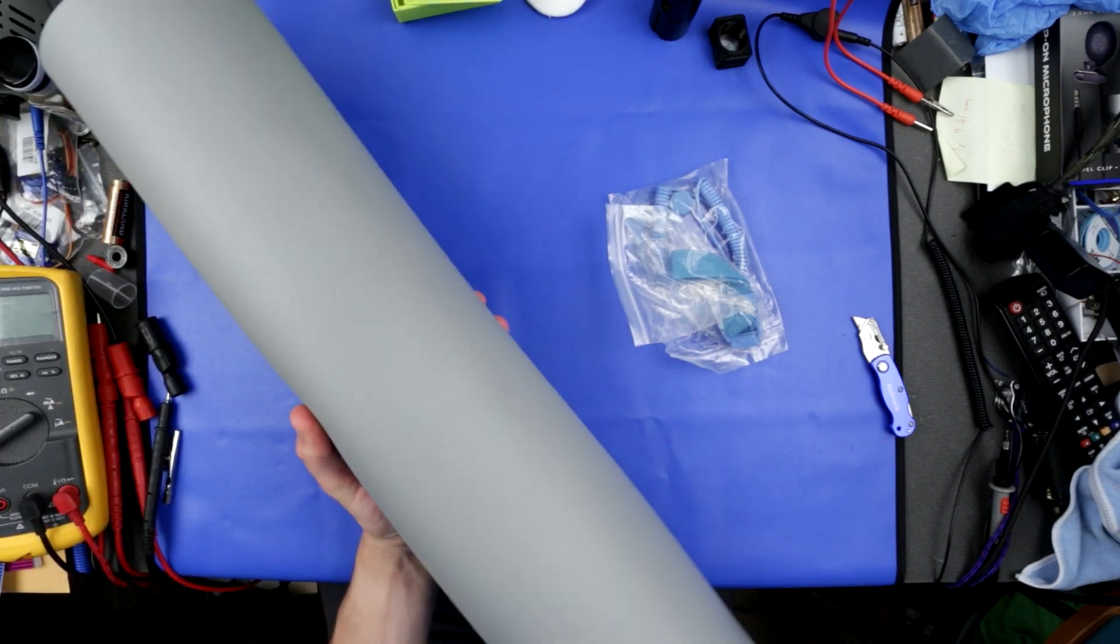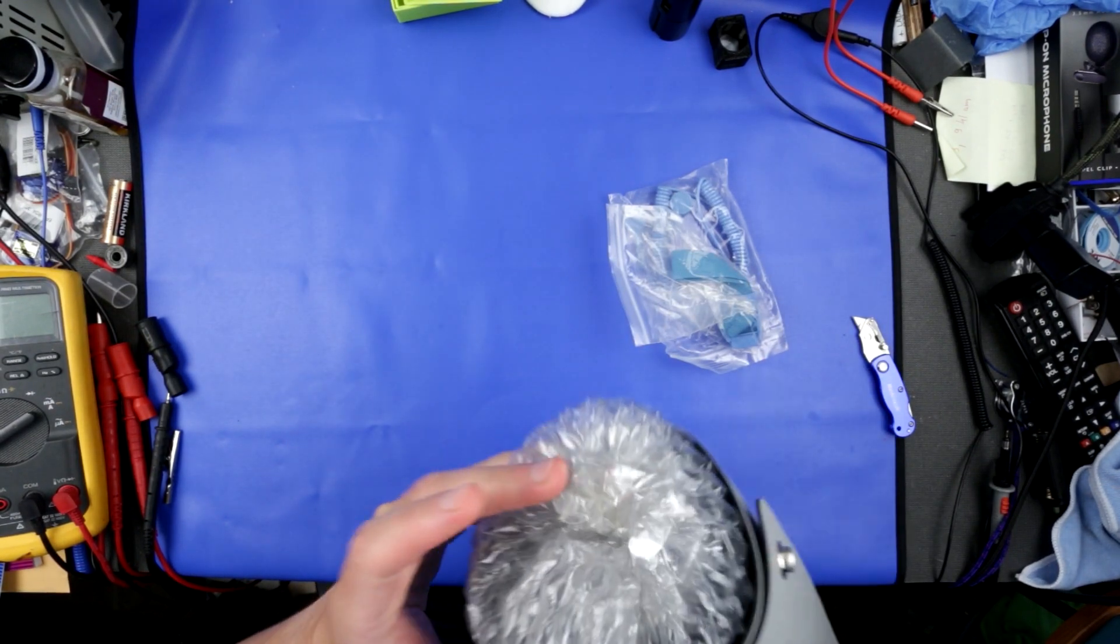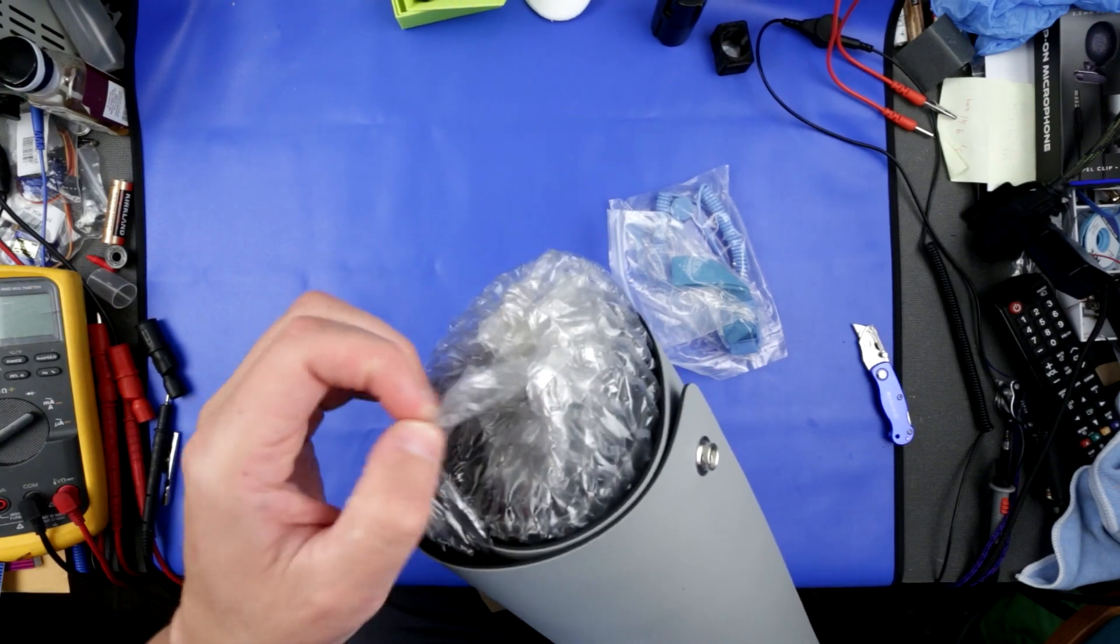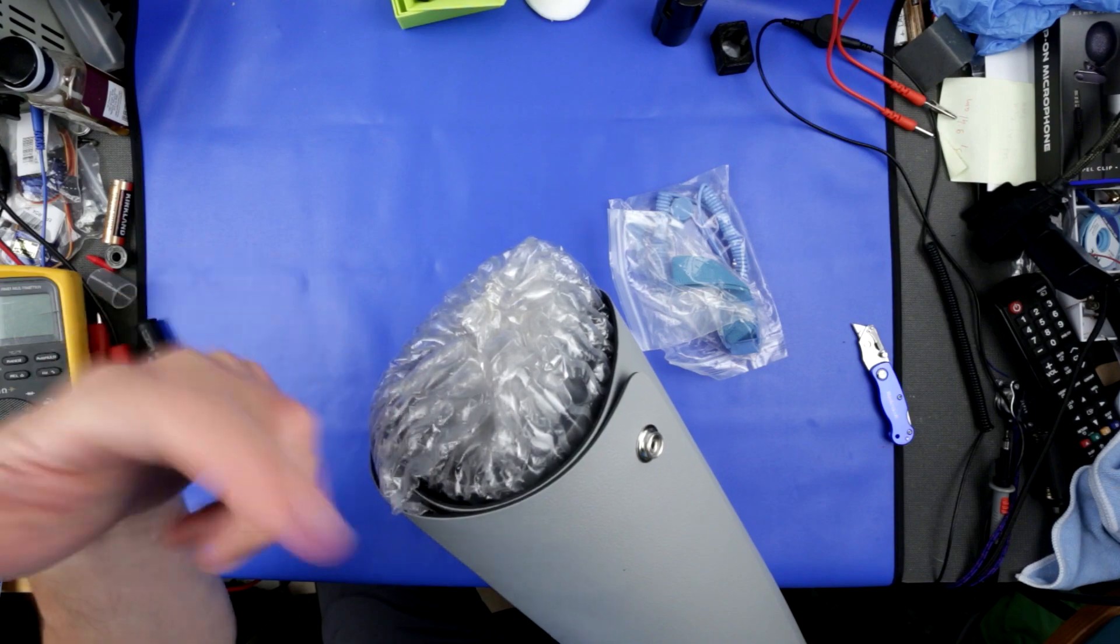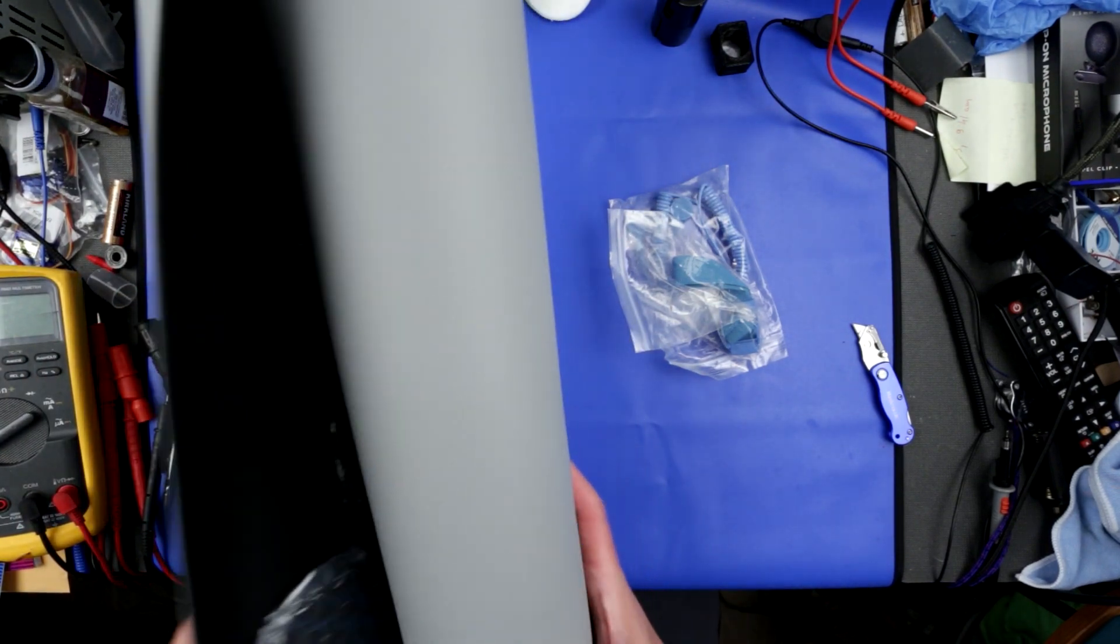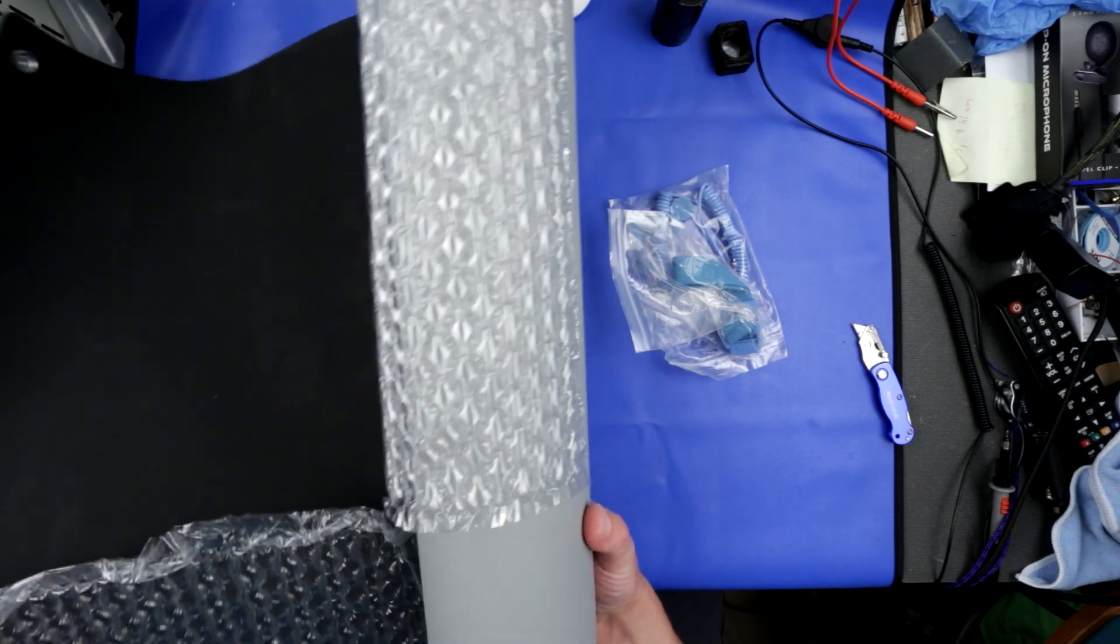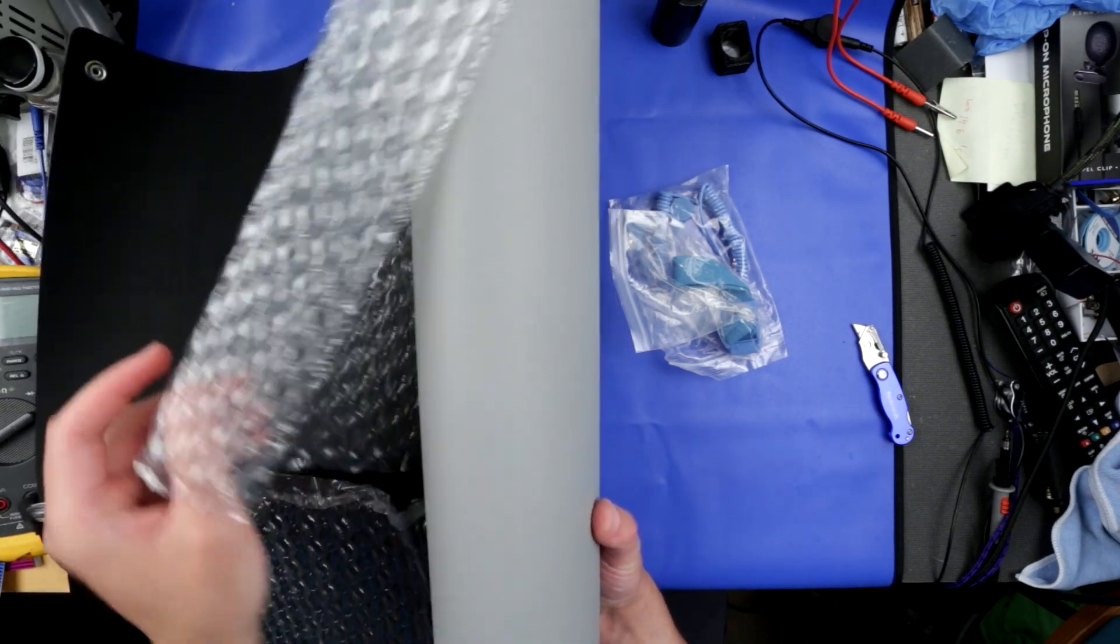So actually pretty nice surface here. And it's packaged quite well. Inside there is foam and bubble wrap to prevent this thing from collapsing. So I will unwind it. And yeah so this is how it goes. That's pretty neat bubble wrap actually. I've never seen this kind of bubble wrap before. Really good.